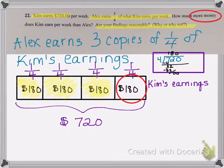Another way to think about it is think about the three-fourths. If Alex earns three-fourths of what Kim earns, that means there's an extra one-fourth, and that's what Kim earns over Alex's salary. So this extra one-fourth is what Kim earns, and that is the $180.